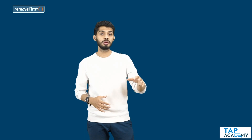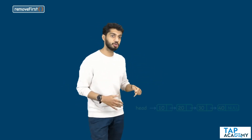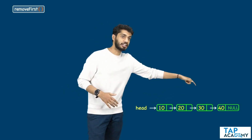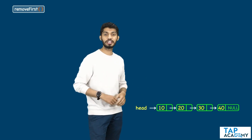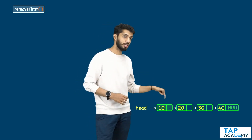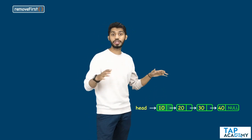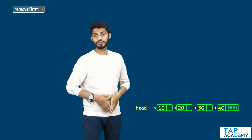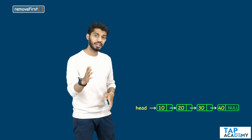Now, let's see how we can remove the first element from a linked list. I am going to create a method called remove first, which should actually remove the first element from a linked list. Basically, let's assume that I have a linked list like this. So, in this particular linked list, what I need to do is remove the first element. This can be done very easily.